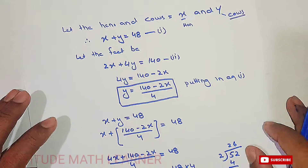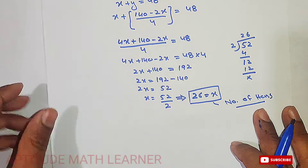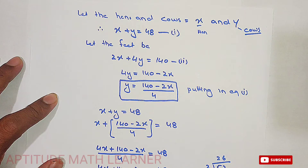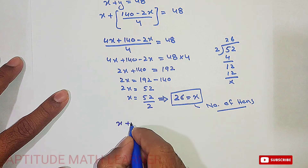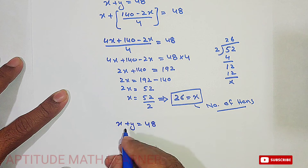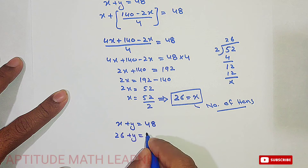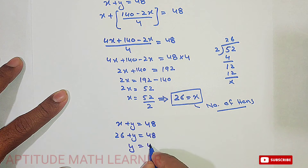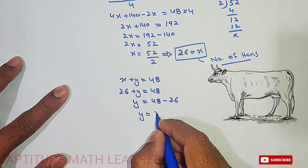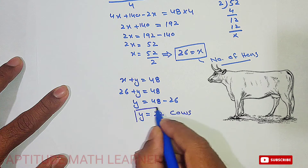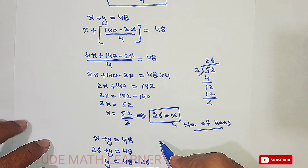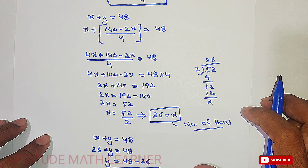If we also want to find the number of cows, we go back to equation one: x plus y equals 48. Substituting x equals 26, we get 26 plus y equals 48, so y equals 48 minus 26, which gives y equals 22 cows. But the question asked for hens, so the answer is 26.